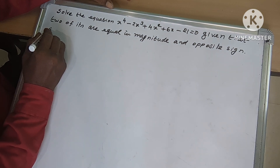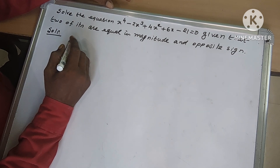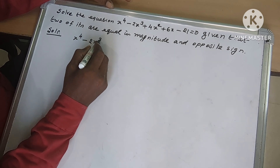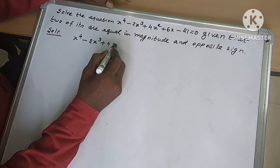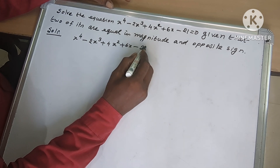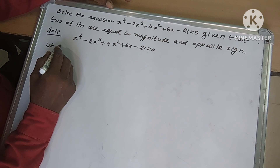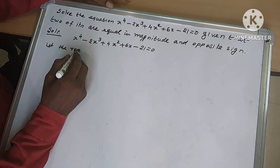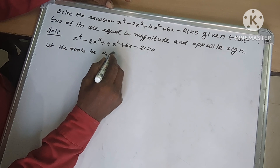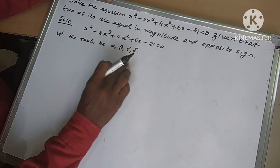So now we solve this. The equation is x⁴ minus 2x³ plus 4x² plus 6x minus 21 equal to 0. Let the roots be alpha, beta, gamma, and delta. So these are the 4 roots.